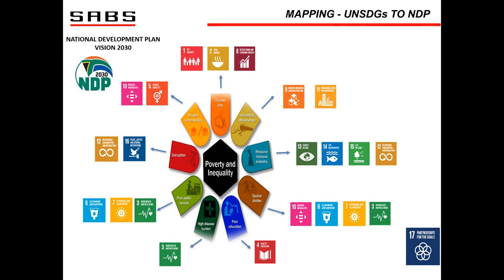Looking at how the National Development Plan pillars align with the United Nations Sustainable Development Goals: the NDP addresses SDG 1, 2, and 8 — no poverty, zero hunger, and decent work and economic growth. All NDP pillars have close alignment to the UN SDGs. One critical element is poor education, which aligns to SDG 4 — quality education — and this is certainly the topic of discussion today. During this webinar, we'll get key insights on the SANS 21001 standard as adopted from ISO.